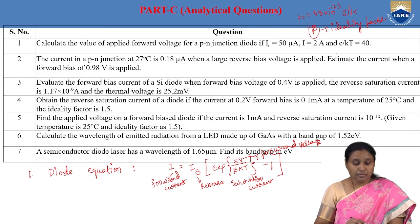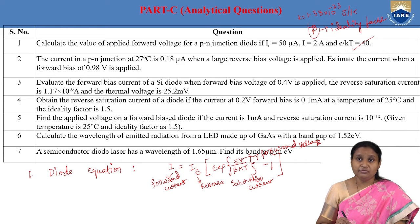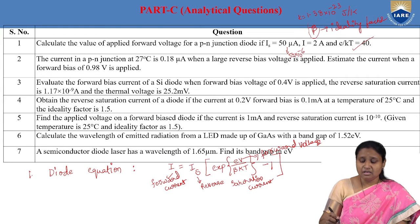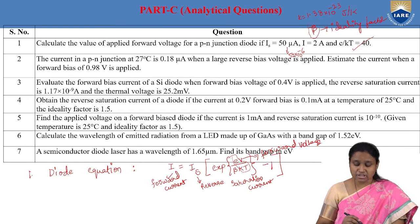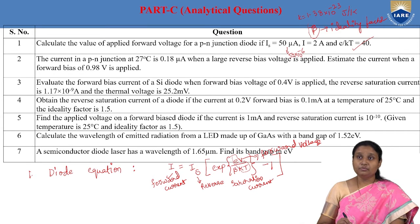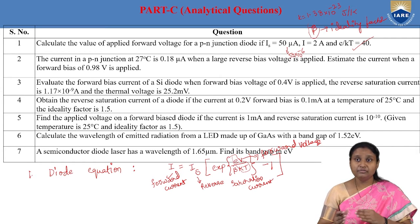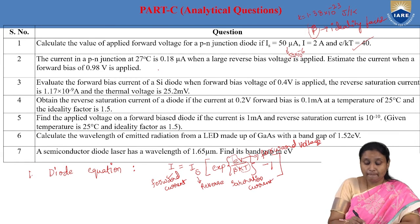In the first problem we need to find forward voltage V. IS = 50 microamps (50 × 10⁻⁶ A), forward current I = 2 A, e/kT = 40, and β = 1 (not given, so assumed). Rearranging the diode equation gives us V. In the second problem, reverse saturation current IS = 0.18 × 10⁻⁶ A, forward voltage = 0.98 V, temperature is given in Celsius and converts to approximately 300 K; we need to find the forward current.